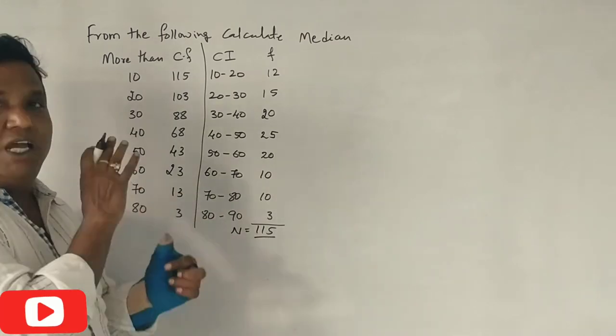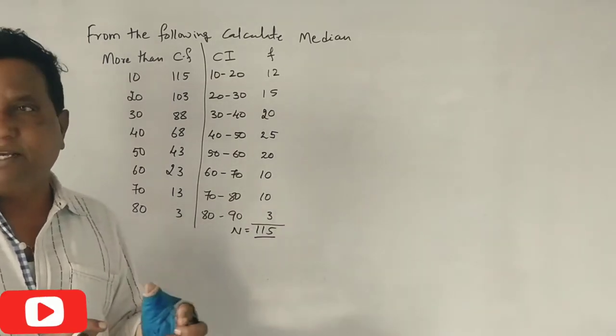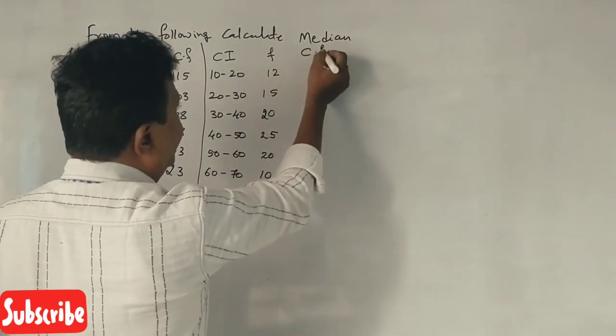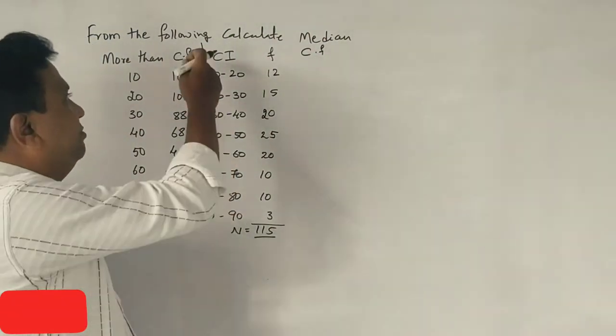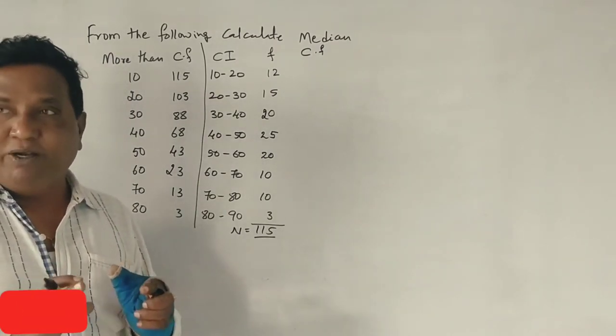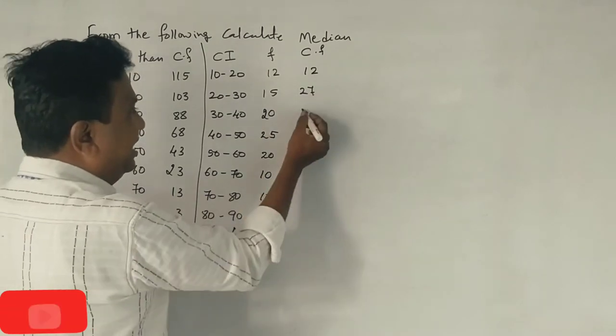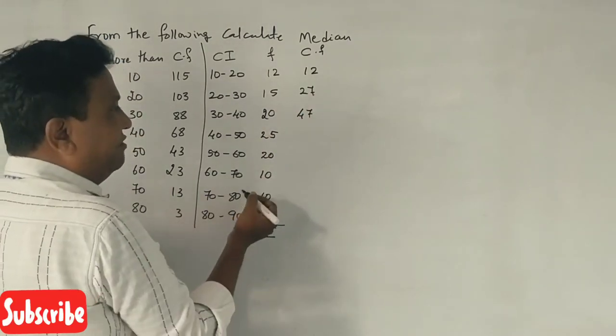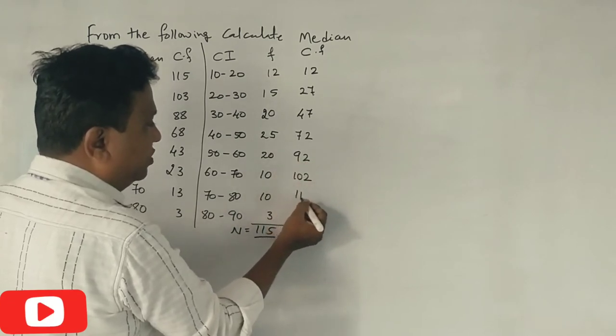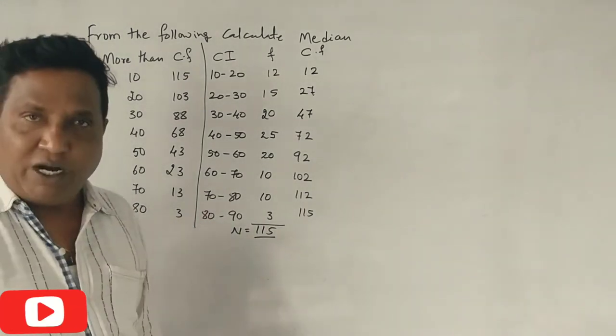More than frequency for continuous series problem, convert to the normal class interval. E-gain model, median calculate model. Cumulate model. 12 plus 15 is 27, 27 plus 20 is 47, 47 plus 25 is 72, 72 plus 20 is 92, 102, 112, 115. E-gain cumulative.